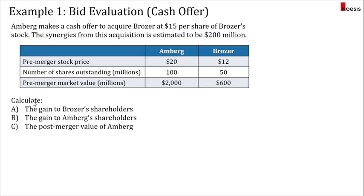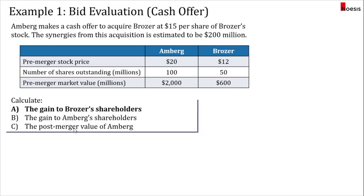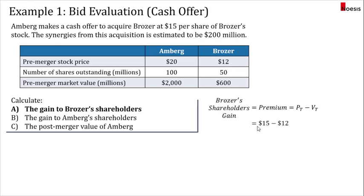We are required to calculate the gain to Browser's shareholders (the target) and the gain to Emberg's shareholders (the acquirer), and the post-merger value of Emberg. To calculate Browser's shareholders' gain, that would be the premium received — the price paid to the target (P sub T) minus the pre-merger market value of Browser. Emberg proposed $15 per share, while Browser's pre-merger stock price is $12, so that's $3 per share. In total, Browser has 50 million shares, so the gain is $150 million. Browser's shareholders will be receiving $750 million ($15 × 50 million shares) against their pre-merger market value of $600 million.